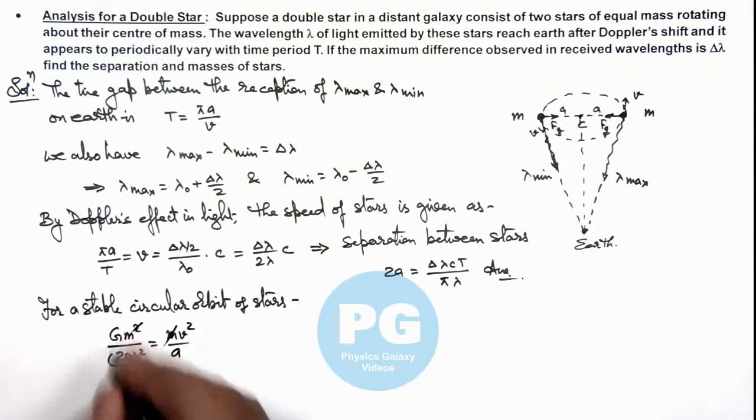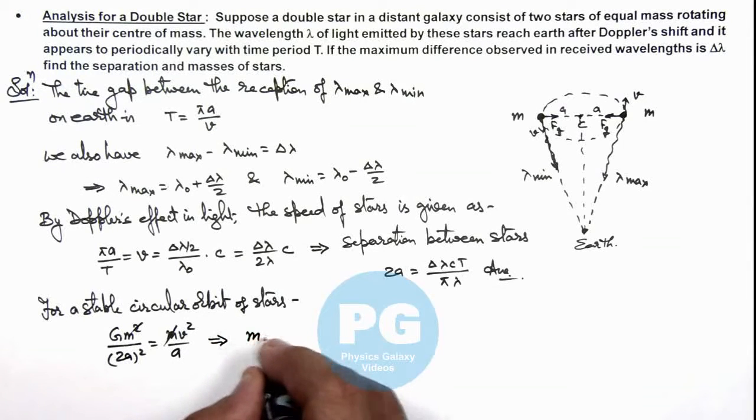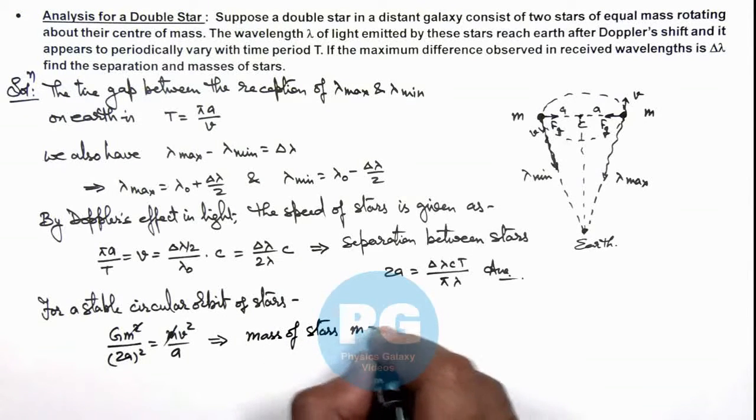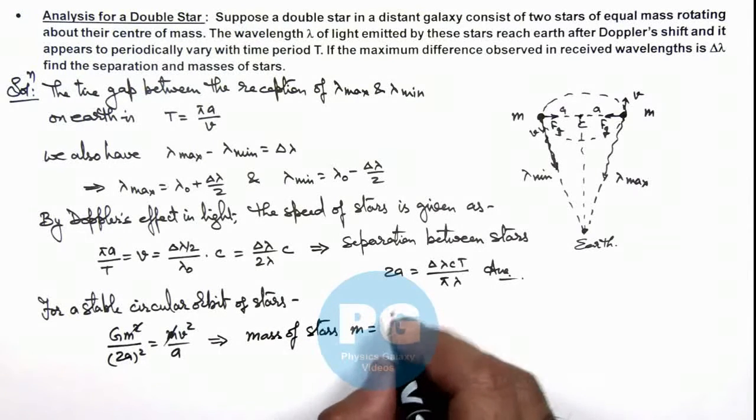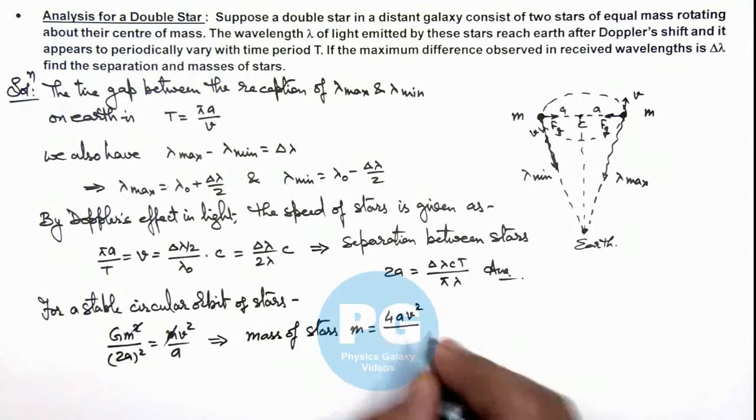Here one m gets cancelled out and simplifying we are getting the value of mass of star m which is given as 4av²/G.